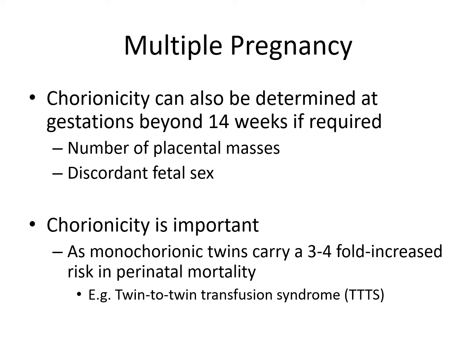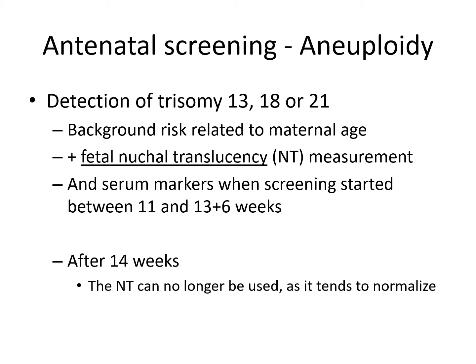Chorionicity is important to determine because monochorionic twins share one placenta and thus carry a three- to four-fold increased risk of perinatal mortality — death in the late antenatal and early postnatal period. One reason for this increased risk is twin-to-twin transfusion syndrome, where abnormal arteriovenous connections within the placental bed cause one fetus to perfuse the other. One twin becomes the pump twin and the other the recipient, leading to uneven sharing: one twin becomes growth restricted and both are at risk of death from heart failure.